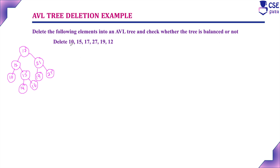Delete successively 10, 15, 17, 27, 19 and 12. This is the given AVL tree. For this AVL tree we need to check the balance factor first. For all leaf nodes the balance factor is 0. Here the number of left subtree nodes is 1 and right is 1, so 1 minus 1 equals 0. Here it is 1 minus 2 equals minus 1. Here it is 3 minus 2 equals plus 1. So the tree is balanced — it is an AVL tree.